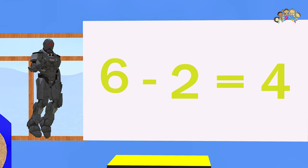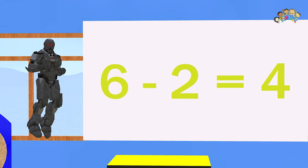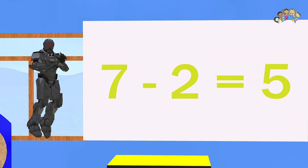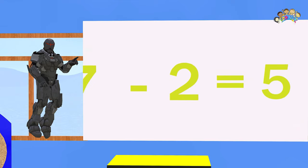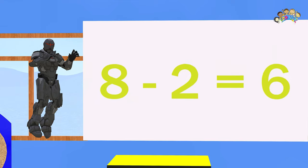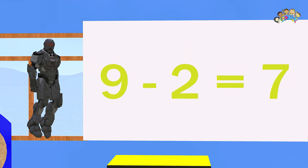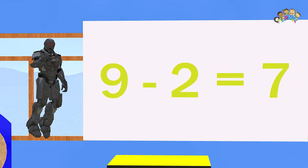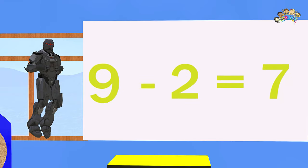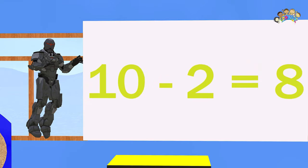Six minus two equals four. Seven minus two equals five. Eight minus two equals six. Nine minus two equals seven. Ten minus two equals eight.